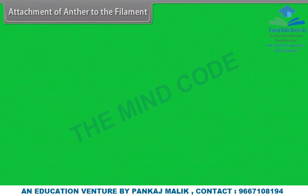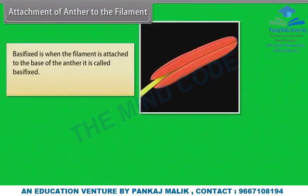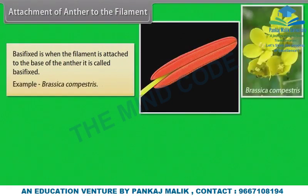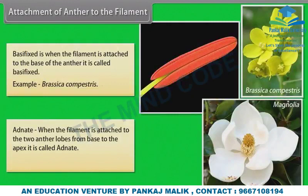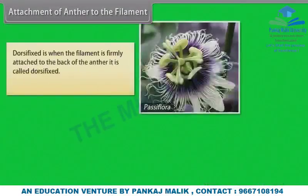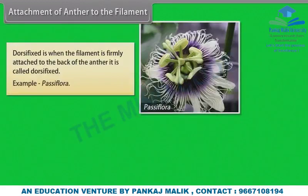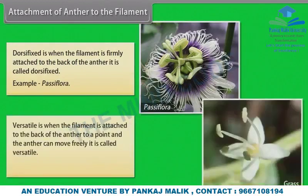Attachment of anther to filament: Basifixed — when the filament is attached to the base of the anther, example Brassica campestris. Adnate — when the filament is attached to the two anther lobes from base to apex, example Magnolia. Dorsifixed — when the filament is firmly attached to the back of the anther, example Passiflora. Versatile — when the filament is attached to the back of the anther at a single point and the anther can move freely, example Grass.